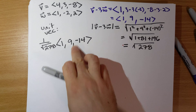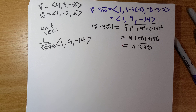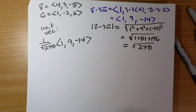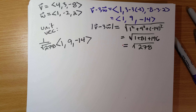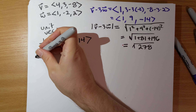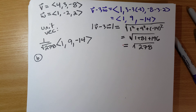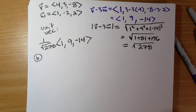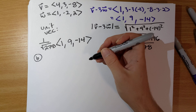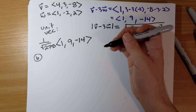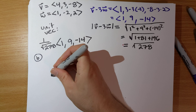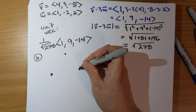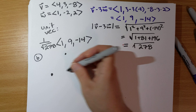You can distribute that 1 over square root of 278 through the vector if you want. Part B — find the area of the triangle with vertices (0, 0, 1), (2, 1, 2), and (3, 2, 1). This doesn't have to do with the previous part; I just put these together.